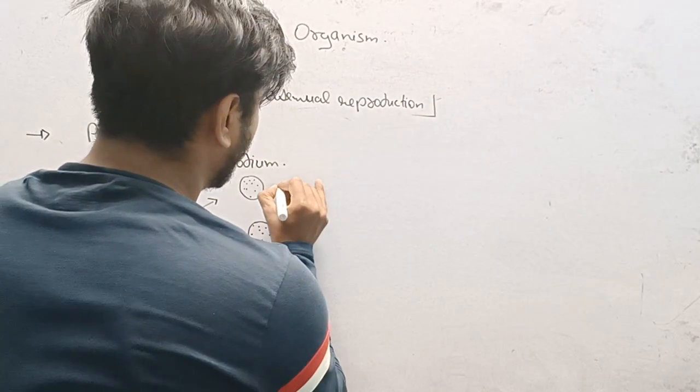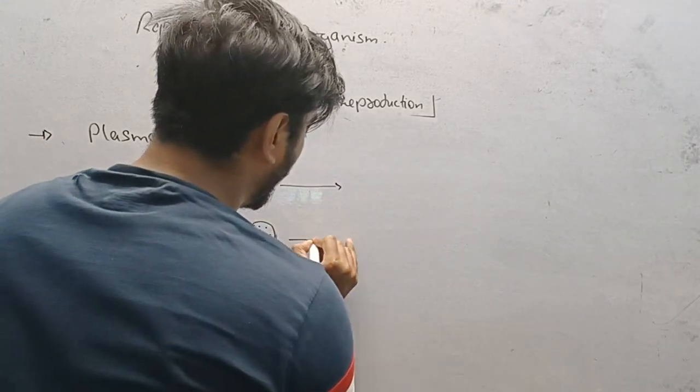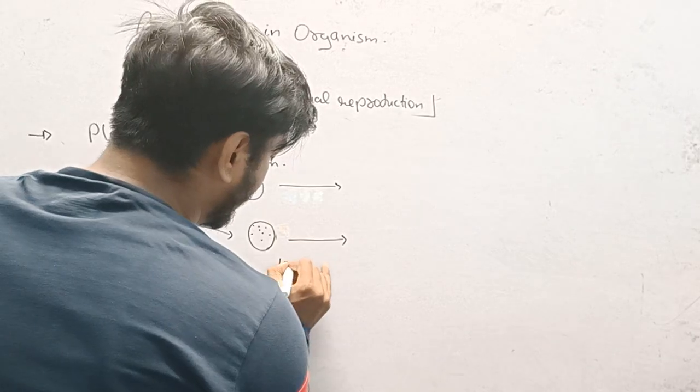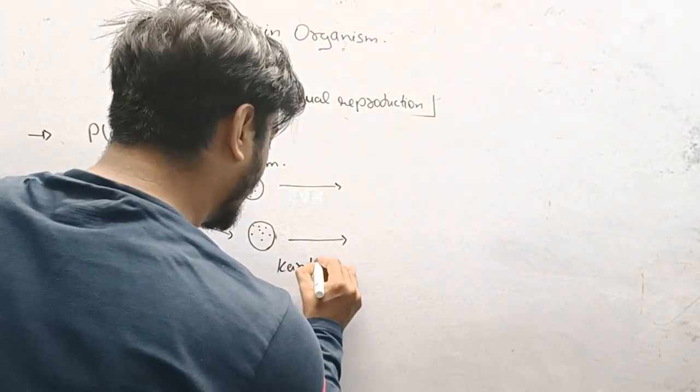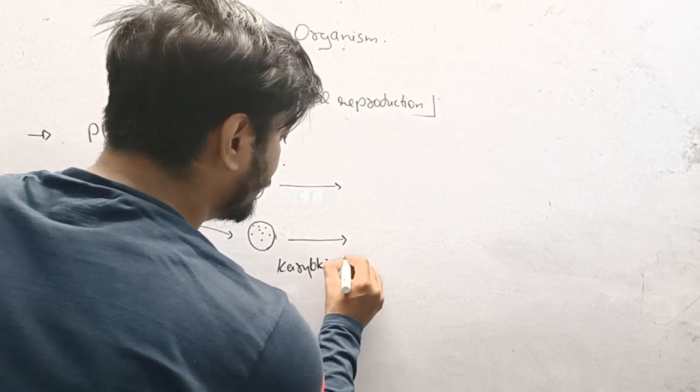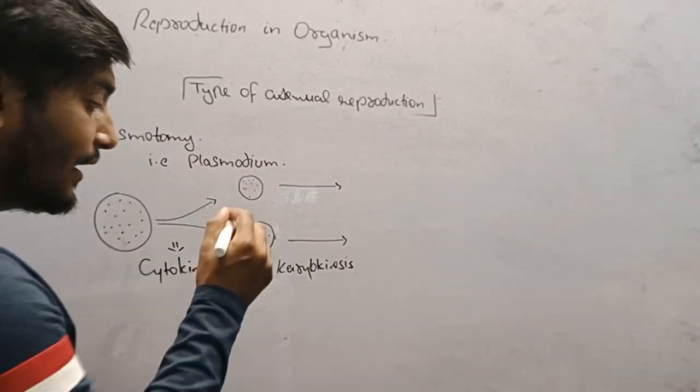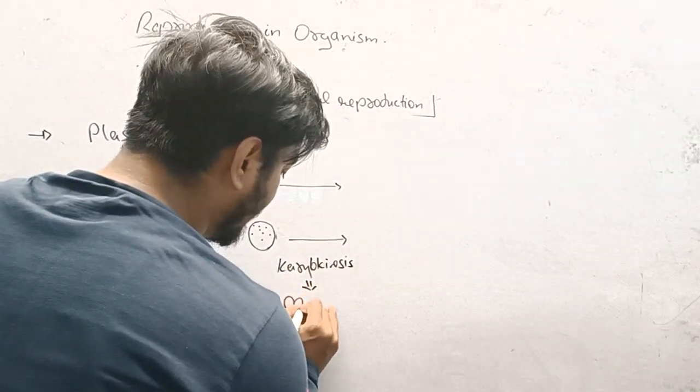This cell, after some interval of time, undergoes the process of karyokinesis. When it goes into the process of karyokinesis, division occurs known as mitosis division.